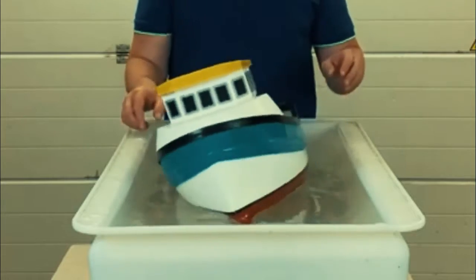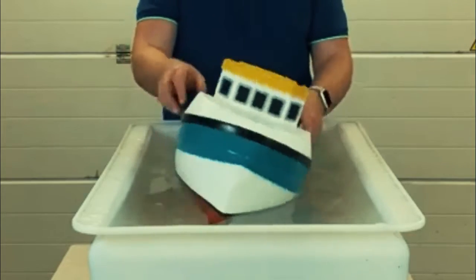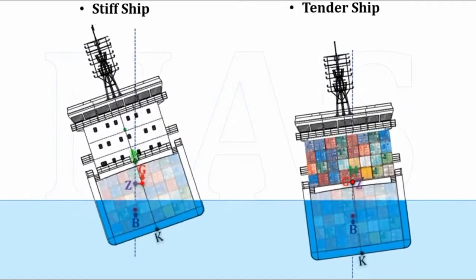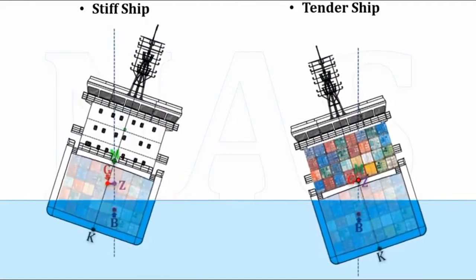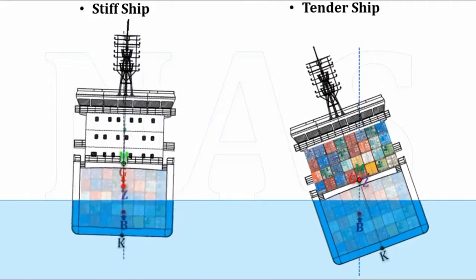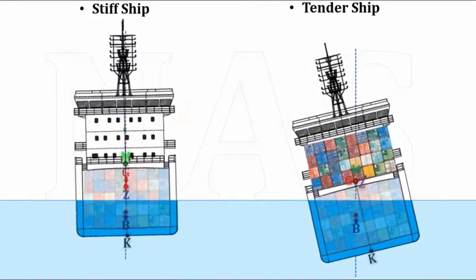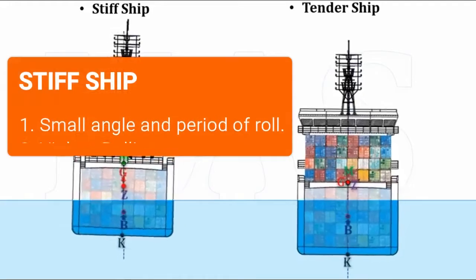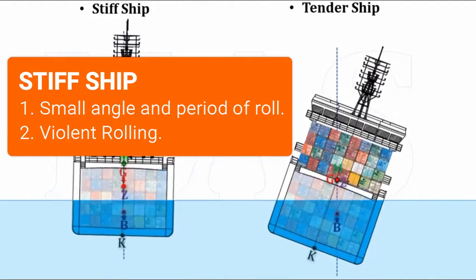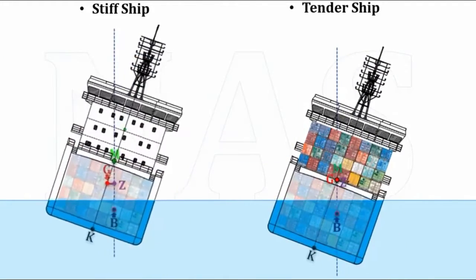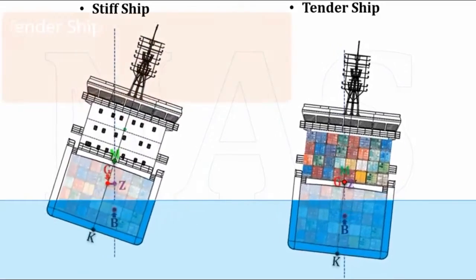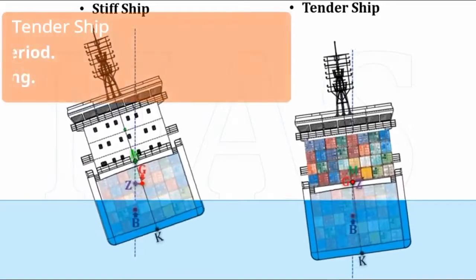Number two: the angle of roll is small and the period of rolling is minimum for stiff ships. But in tender ships we can observe a large angle of roll and the period of rolling is also more when compared to the stiff ship. Number three: rolling will be violent and irregular in a stiff ship.